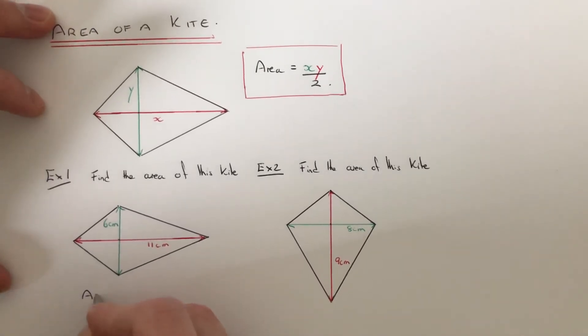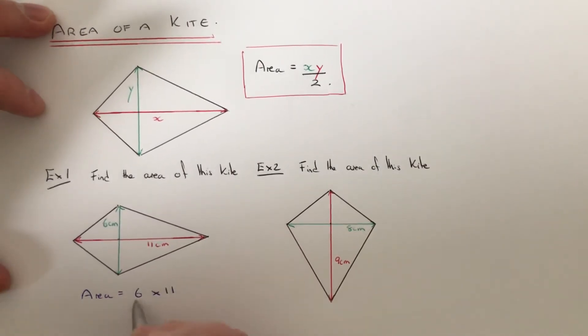To work out the area, we just need to multiply these two diagonal lengths together and then divide the answer by 2. So 6 times 11 is 66, and if we divide that by 2, that will give us an answer of 33cm².